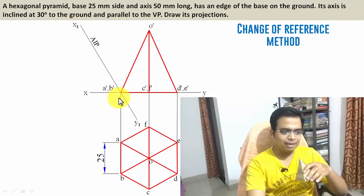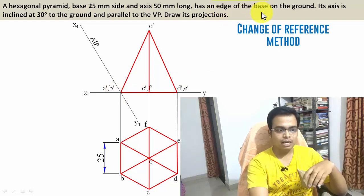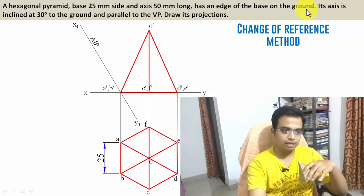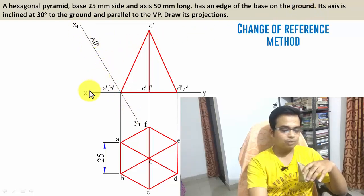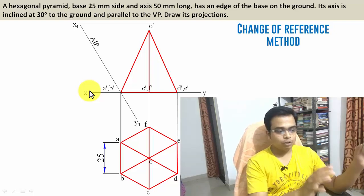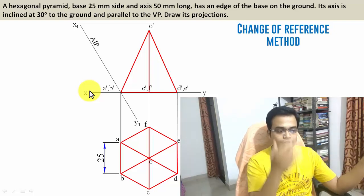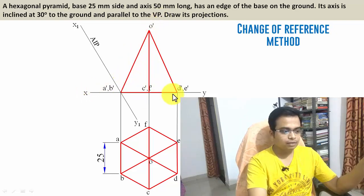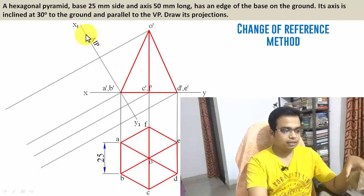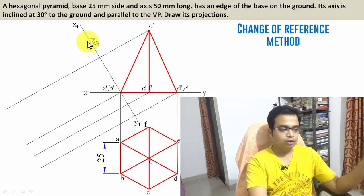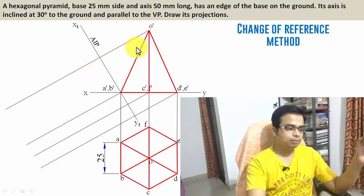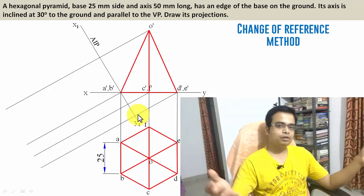The auxiliary inclined plane has been made to pass through A dash B dash for a very specific reason — it's clearly mentioned that an edge of the base has to remain in contact with the HP. Now what we'll do is produce lines from all these points in such a manner that they're intersecting this line at 90 degrees. The best way to do this is with the help of a mini tractor, keeping one scale perpendicular, then drawing lines with a 4H pencil.